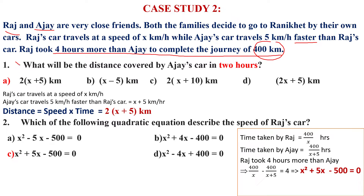First question: what will be the distance covered by Ajay's car in two hours? We let Raj's car travel at a speed of x km per hour. Since Ajay travels 5 km per hour faster than Raj, Ajay's speed is x plus 5 km per hour. In two hours, multiply by 2, so the distance covered is 2(x + 5) km. Option A is correct.